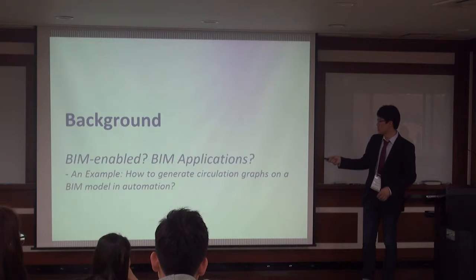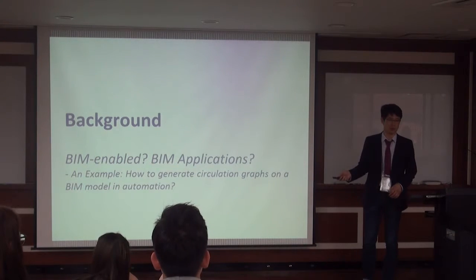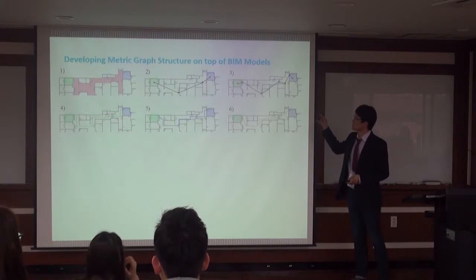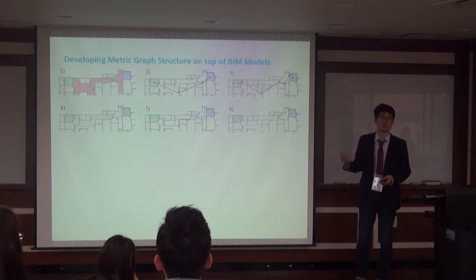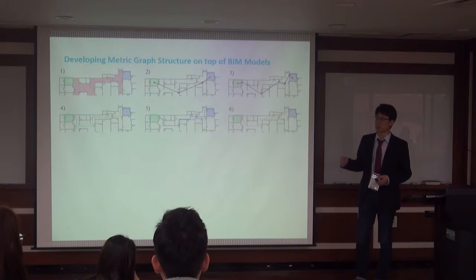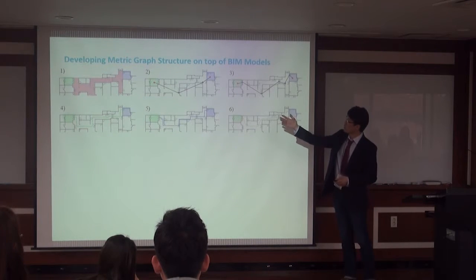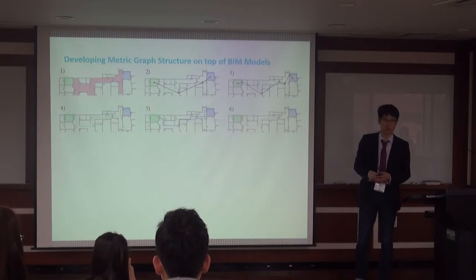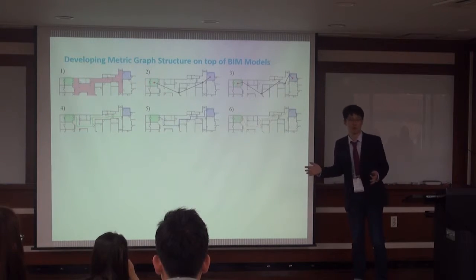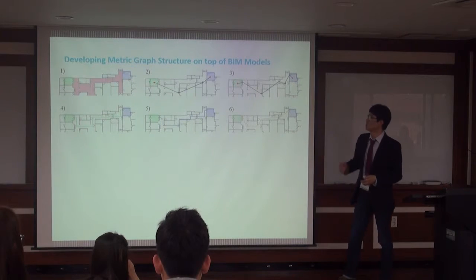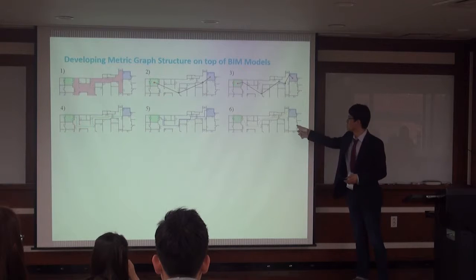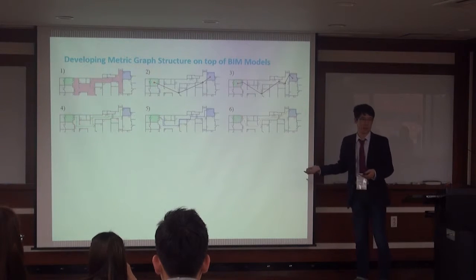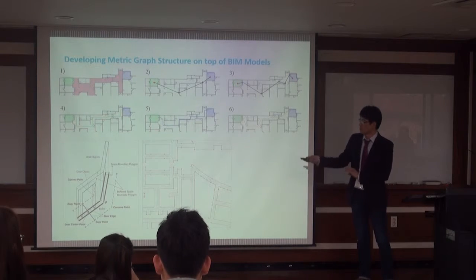The first question is: how to generate circulation graphs on a given BIM model? Let's take a look at the series of graph representations for building circulation. Building circulation here means pedestrian indoor circulation in a built environment. Number one, two, three — kind of topological, color coding, or some topological relationship, also some metric, and in computation terms, some robot movement. Number six is the metric graph I implemented, which is architecturally generated based upon my algorithm using a given BIM model.